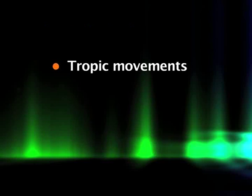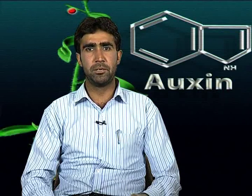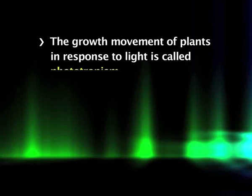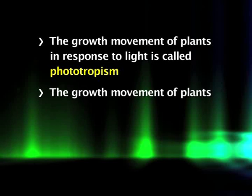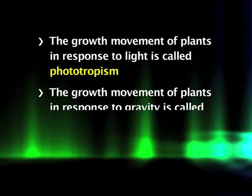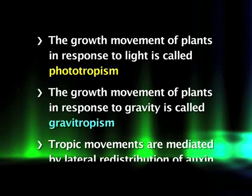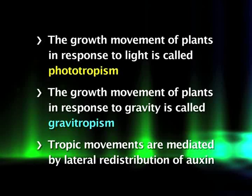Plants orient themselves with respect to light and gravity. The growth movement of plants in response to light is called phototropism, and the growth movement in response to gravity is called gravitropism. These tropisms in plants are mediated by lateral redistribution of auxin.